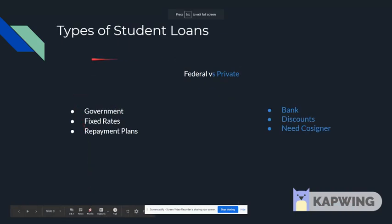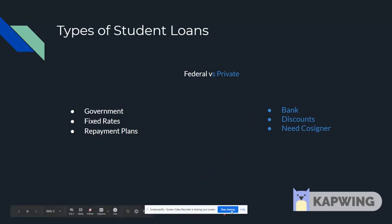Types of student loans. There are two types of student loans: federal and private. A federal loan is funded by the government and typically has better fixed rates and repayment plans. However, a private loan is funded by a lender, like a bank. You can qualify for additional discounts, although most students need a cosigner.